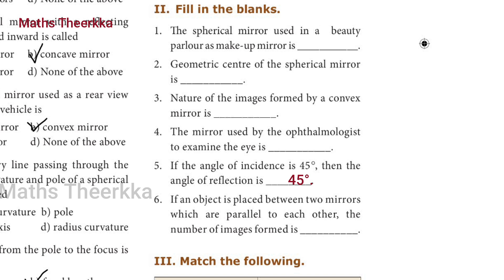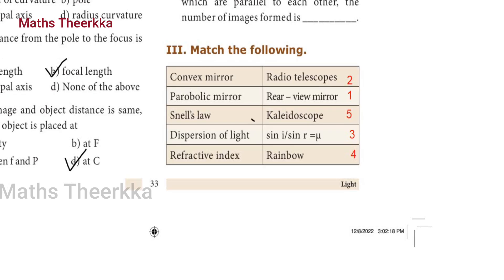Sixth question: if an object is placed between two mirrors which are parallel to each other, the number of images formed is? Answer: infinite. Third section, match the following. First: convex mirror - rear view mirror.